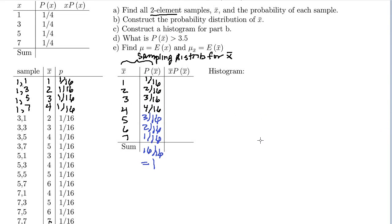So let's go ahead and construct our histogram for this distribution. On the horizontal axis, we are going to have our values for X bar, and on the vertical axis is going to be probability of X bar.